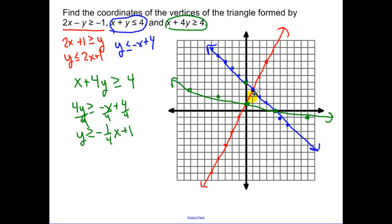For our red line we shade below. For the blue line we're shading below, and the green line we're shading above. So that's this region here. But I want the coordinates of the vertices. One of them is right there, that is 1, 3. The next one is that point right there, that's 0, 1. And our last one is 4, 0.